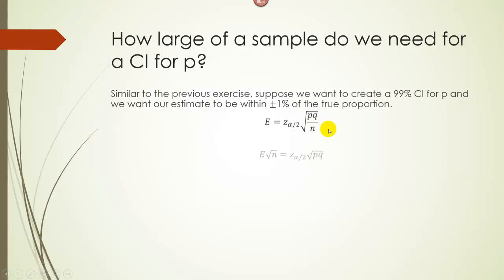So multiplying both sides by the square root of N, we get E√N = z times √PQ. Divide by E to get N by itself. We get this, and then square both sides, we get n = (z/E)² times PQ.